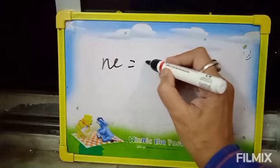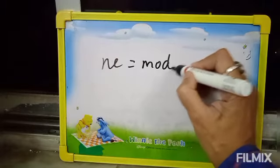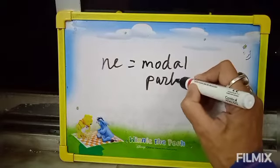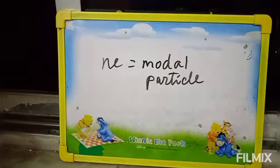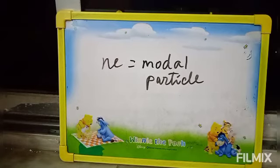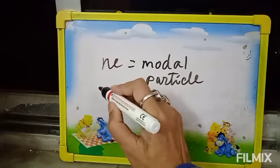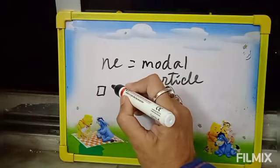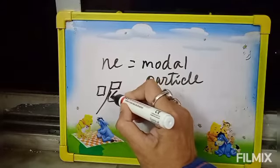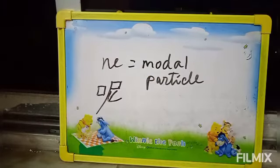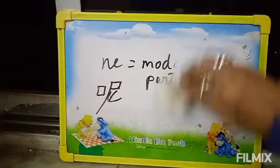The next character is Na. Na is a modal particle in Chinese. It expresses in Chinese sentences what you want to know about. I will be showing you some examples later on, then it will be more clear. Now I am showing you how to draw this character, Na. This is the character Na.